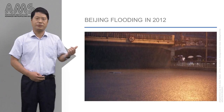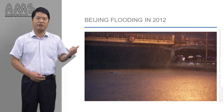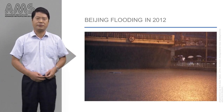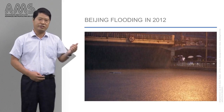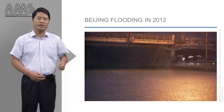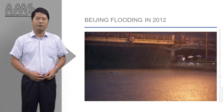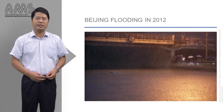This photo shows the severe flooding of Beijing which happened on the 21st of July 2012. What we see is the road, not the river, and notice the top of the car. During that storm, 1.6 million people were affected, 77 people died, and the direct economic loss was 11.6 billion yuan RMB.